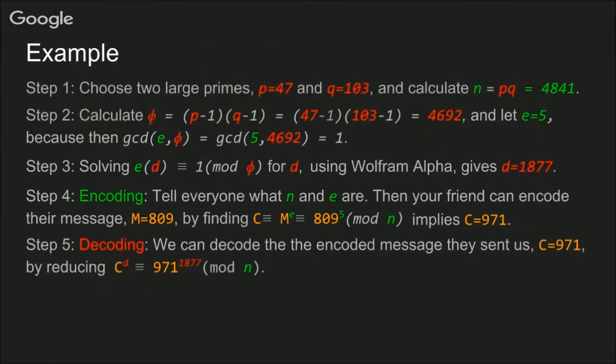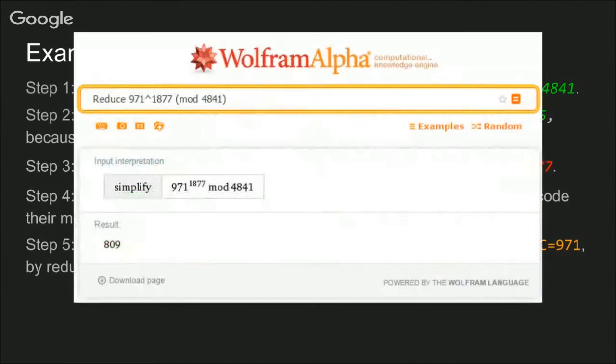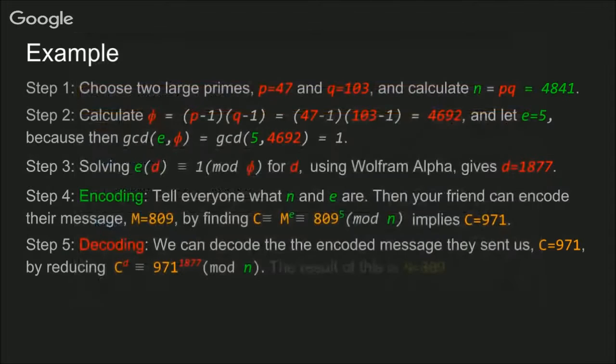And what we're going to do with that is we're going to raise it to the Dth power. So if we take 971 and raise it to the 1877th power and then reduce it mod N, we should get back our original message M. And if we plug that into a calculator, we do. We get 809. And that just shows the power of RSA. We got the original message back and no one would be able to steal the message.